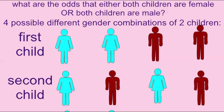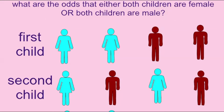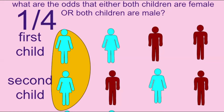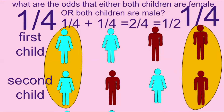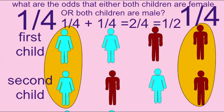If one were to calculate the odds that in a family of two children both were female or both were male, one would use the law of the sum. The odds that both are female is 1 in 4. The odds that both are male is 1 in 4. And the odds that one would obtain either result — that both are female or both are male — would be 1/4 plus 1/4 equals 1/2. These are not independent events because they cannot both be true.